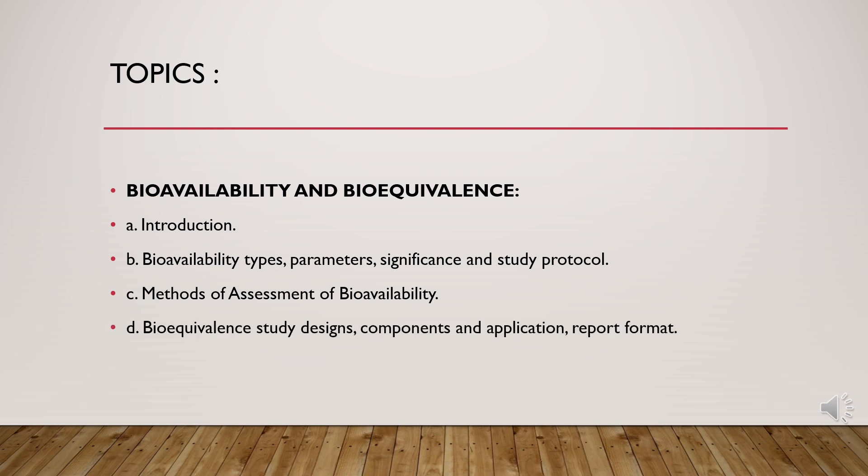Let me tell you all the topics which are part of this chapter. The topics covered are: introduction to bioavailability and bioequivalence, types of bioavailability, various parameters, significance, and study protocols. Next is methods of assessment of bioavailability, including the area under the curve using the trapezoidal rule — the main method of assessment. Finally, bioequivalence studies: designs, components, application, and report format.